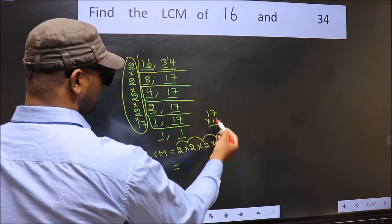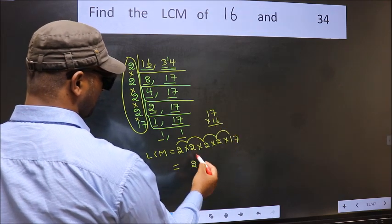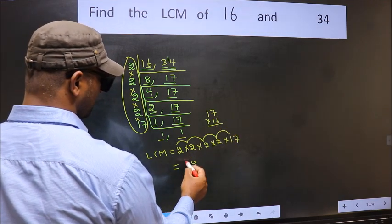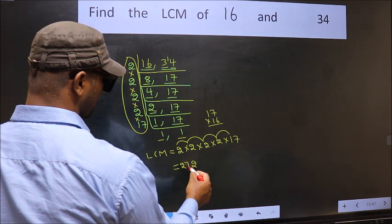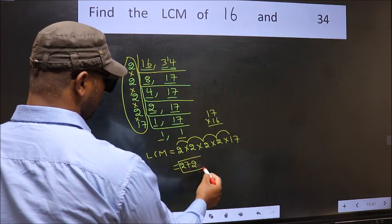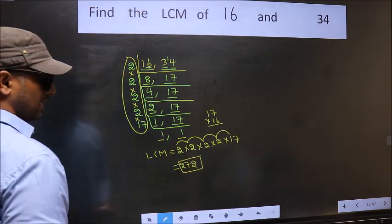16 into 17: 16 into 7 is 112, so write 2 carry 11. 16 into 1 is 16, plus 11 is 27. So 272 is our LCM.